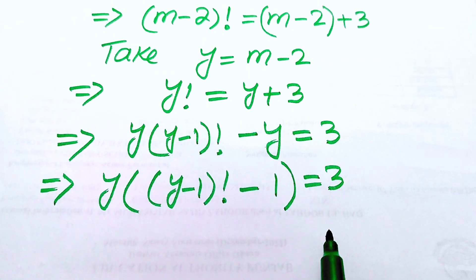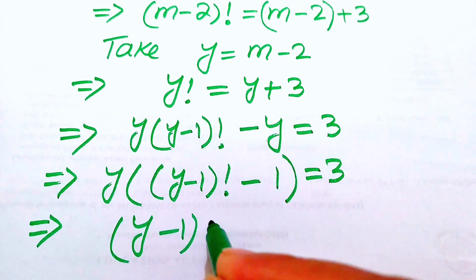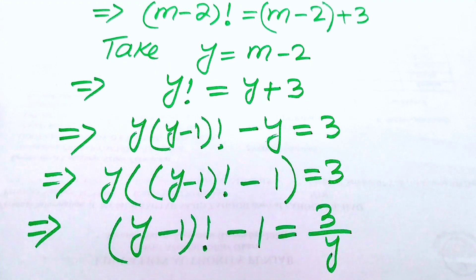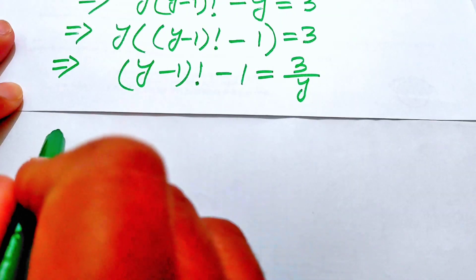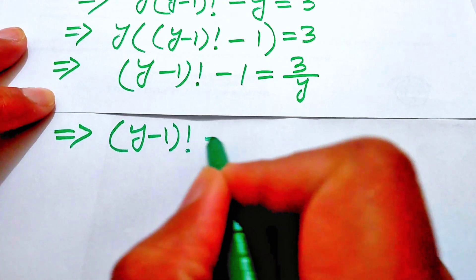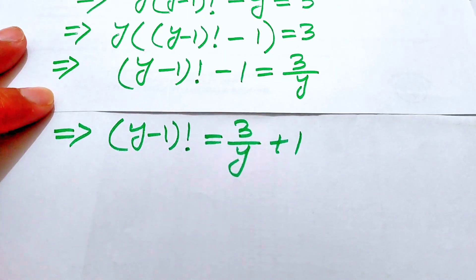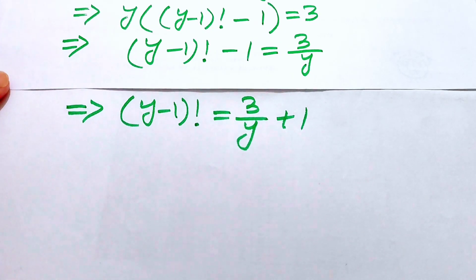Moving y to the right-hand side gives (y minus 1) factorial minus 1 equals 3 over y. Moving the minus 1 to the right-hand side gives (y minus 1) factorial equals 3 over y plus 1. This is the final factorial equation after simplification.